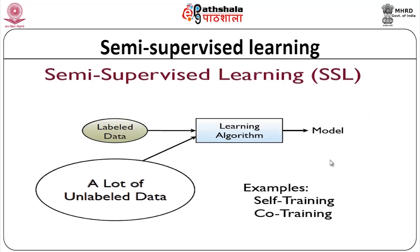That is called semi-supervised learning. If you take labeled data and a lot of unlabeled data and apply an algorithm to learn a model, then you call that semi-supervised learning or SSL. Examples of semi-supervised learning are self-training and co-training.